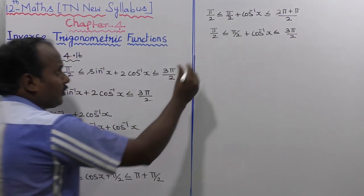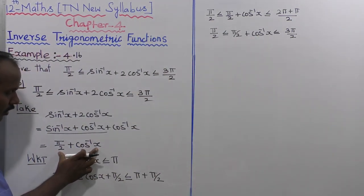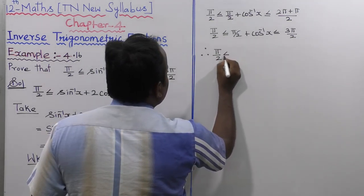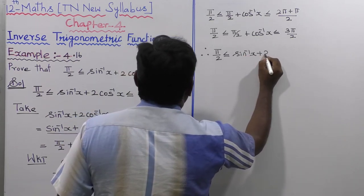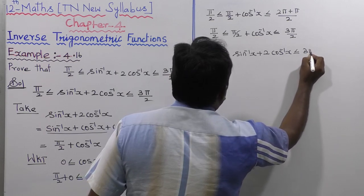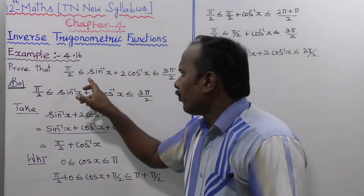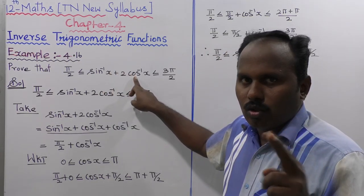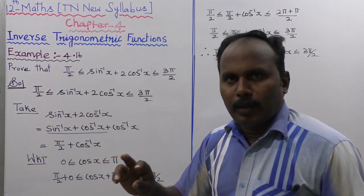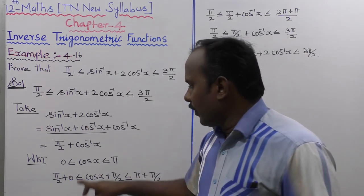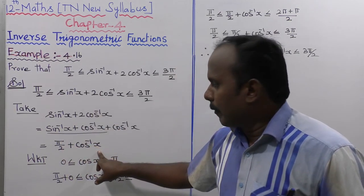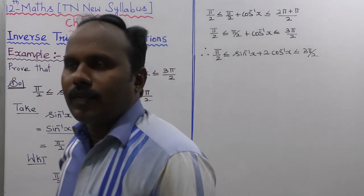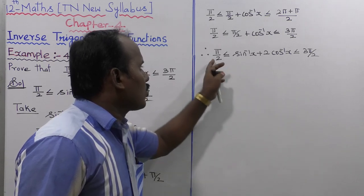Since π/2 + cos⁻¹(x) equals sin⁻¹(x) + 2·cos⁻¹(x), we have proved that π/2 ≤ sin⁻¹(x) + 2·cos⁻¹(x) ≤ 3π/2. This completes the proof, using the identity sin⁻¹(x) + cos⁻¹(x) = π/2 and the principal value range of cos⁻¹(x).